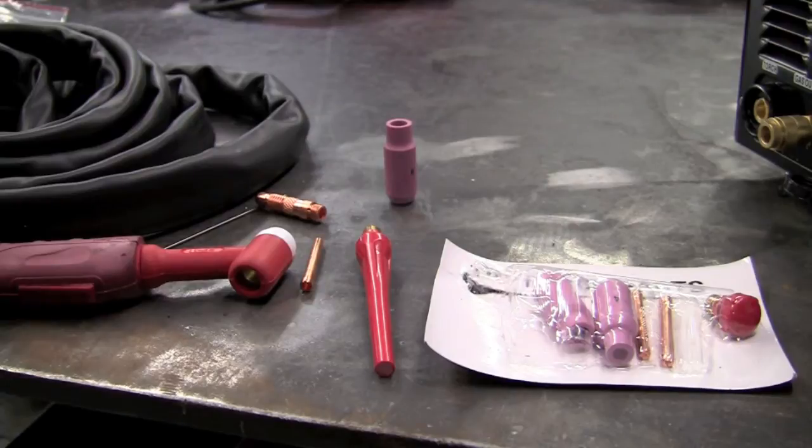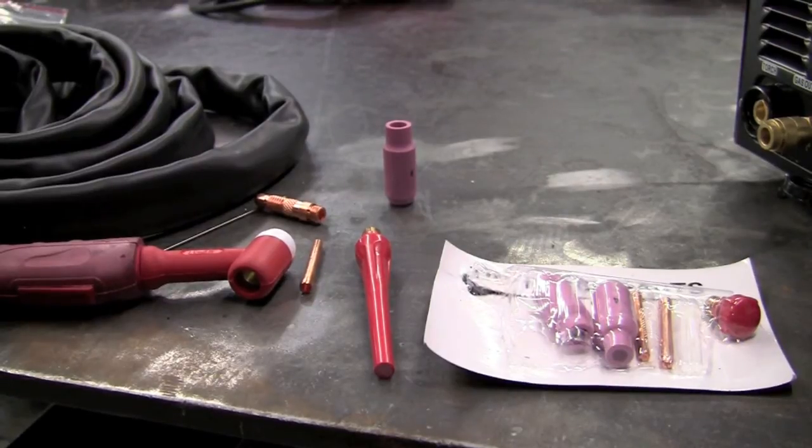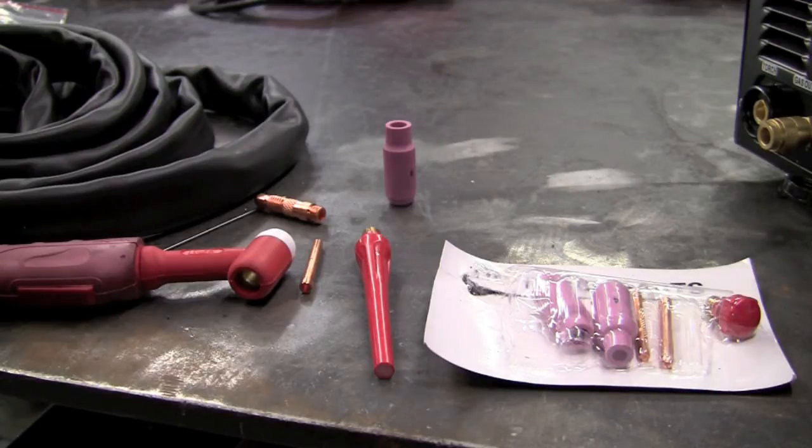The TIG torch comes with just about everything you need, except for tungsten. The three choices of tungsten that I would use for this machine would be the 2% thoriated, the red top, 2% seriated, the gray in longevity brand, or the orange international, or the 2% lanthanated blue top.